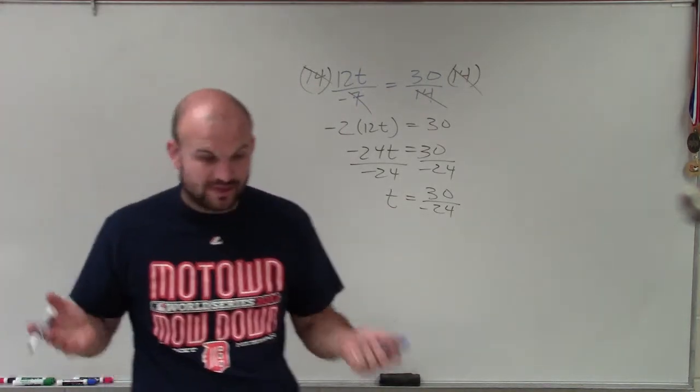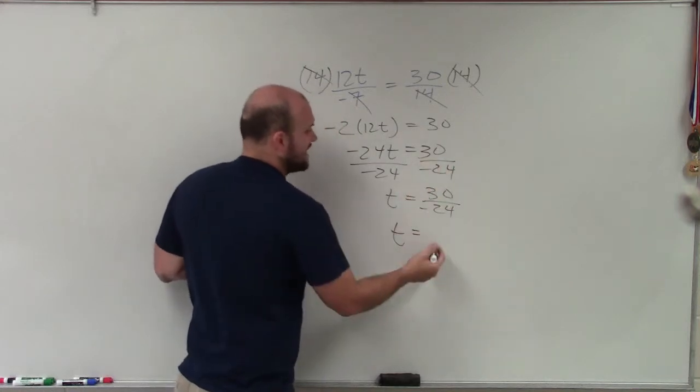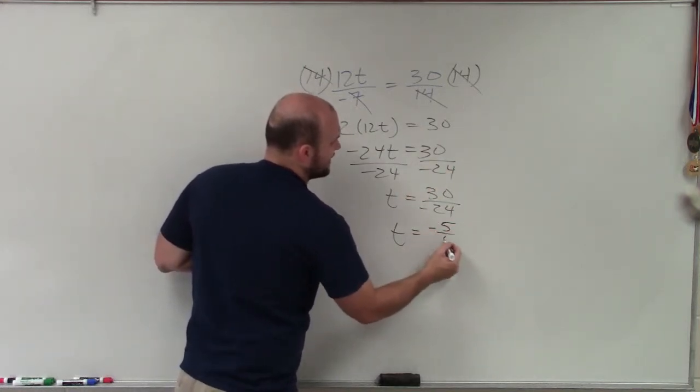Now, obviously I still need to determine what is the largest number that divides into both of them. I could say 6. So when I divide 6 out of there, I'm left with negative 5 fourths.